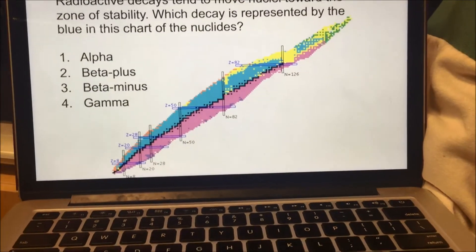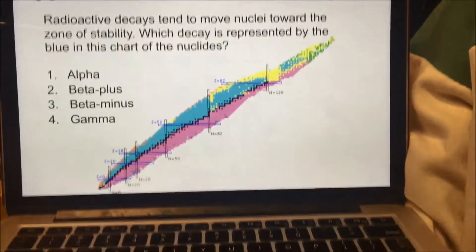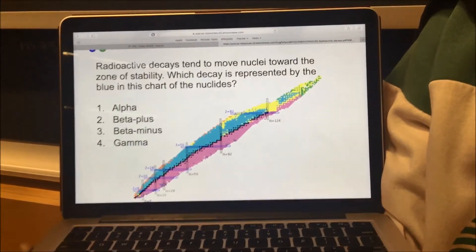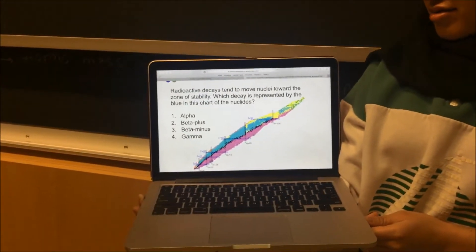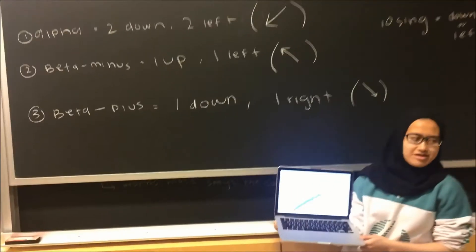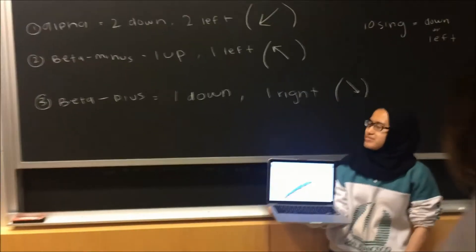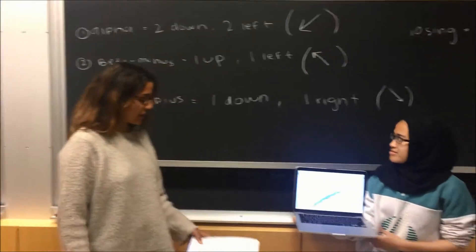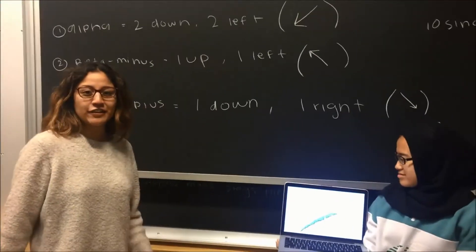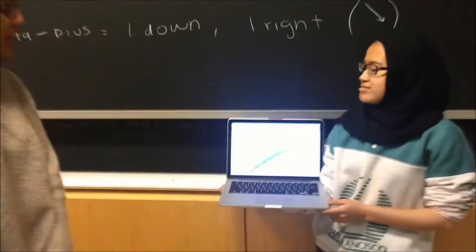So the black region represents stable atoms, and everything else is just unstable isotopes. How do the decays play into this if we look at the board? The two things you want to focus on are your protons and your neutrons — how they're changing.